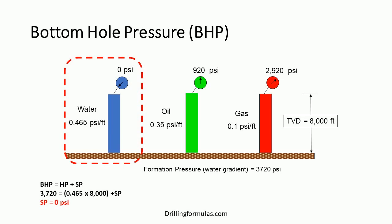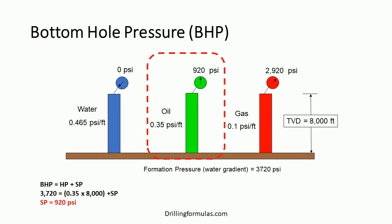In the first case, the hydrostatic column is water, which is equal to formation pressure, so surface pressure is equal to 0 psi. In the second case, bottom hole pressure is still based on the water gradient, but the fluid column is oil at 0.35 psi per foot, which is a lower density than water at 0.465 psi per foot. Therefore, in order to balance bottom hole pressure, we need a surface pressure of 920 psi.